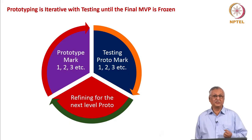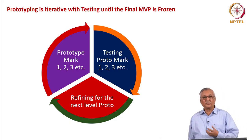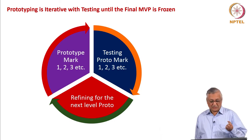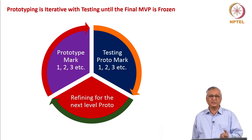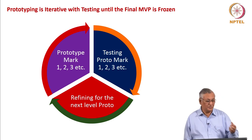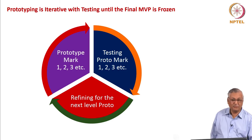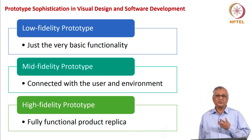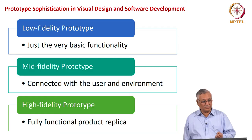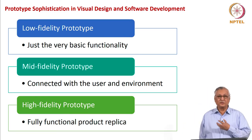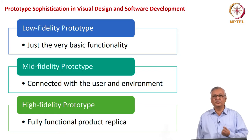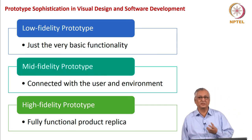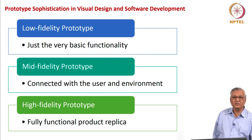Prototyping is for sure an iterative process. Typically, companies have Mach 1, Mach 2, Mach 3 kinds of prototypes. The idea is to start with a Mach 1 prototype, test it, refine it for the next level, and repeat the iteration until you achieve prototype functionality and perfection that the market would accept. Similarly, for software and visual design products, you have a low fidelity prototype with just basic functionality, a mid fidelity prototype connected with the user and environment, and a high fidelity prototype — a fully functional product replica simulating what the market would require.